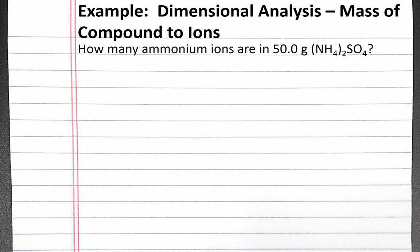In this example, we convert from the mass of a compound to the number of cations. Our problem reads: how many ammonium ions are in 50 grams of ammonium sulfate?